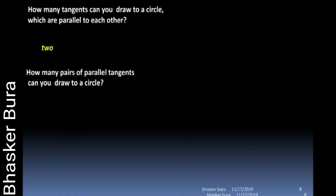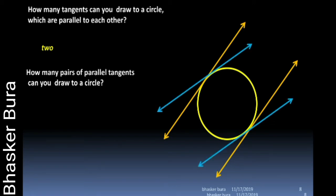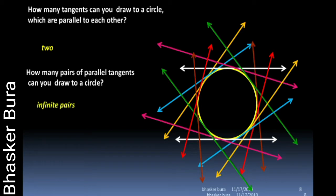Now, how many pairs of parallel tangents can you draw to a circle? A circle is a set of infinite points and it contains infinite diameters. At the endpoints of each diameter we can get a pair of parallel tangents. So as a circle contains infinite diameters, we get infinite pairs of parallel tangents.